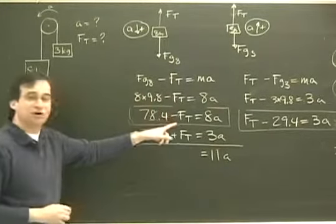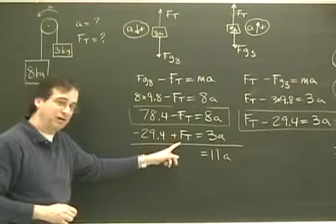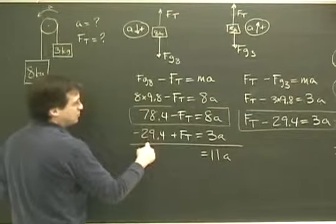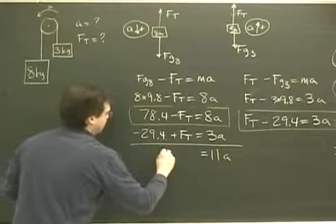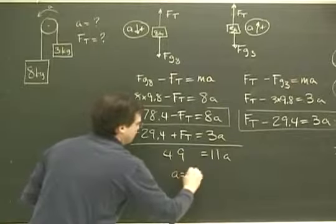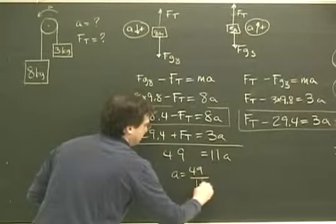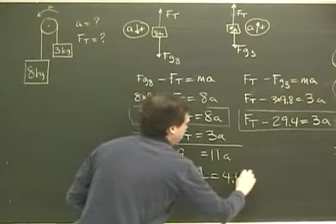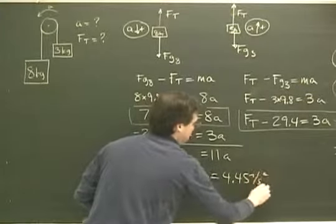If I add them together, this is going to be 11a. And look, the tensions are going to drop out. Negative Ft, positive Ft, I got zero. I take 78 minus 29.4 and that's going to be 49. 49 equals 11a. So the a is 49 divided by 11 is going to be 4.45 meters per second squared. And now I have the acceleration.